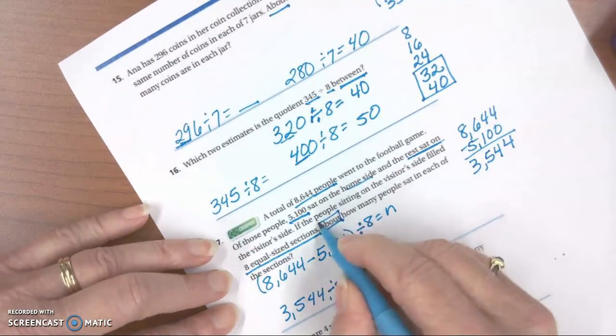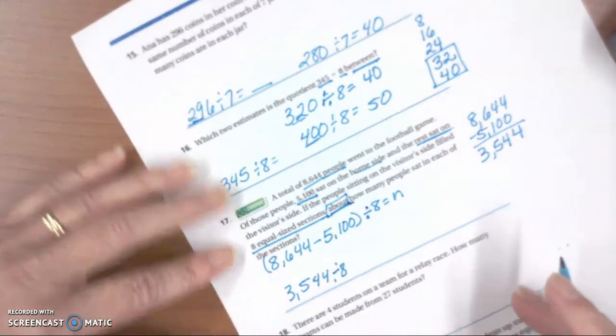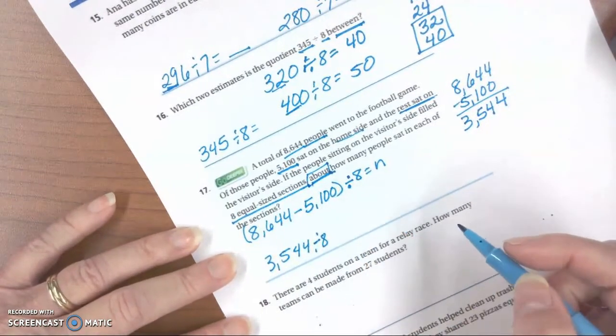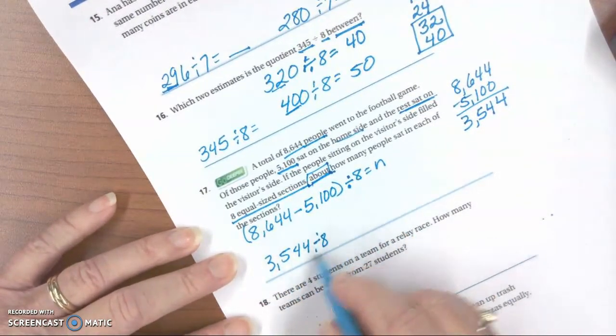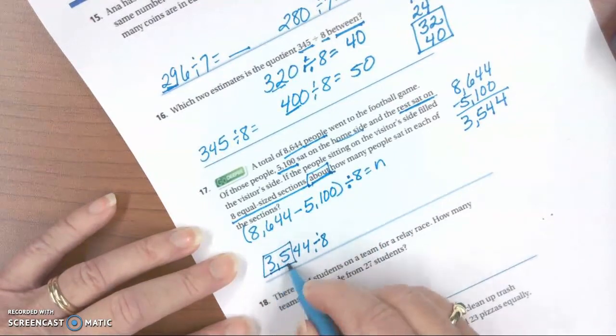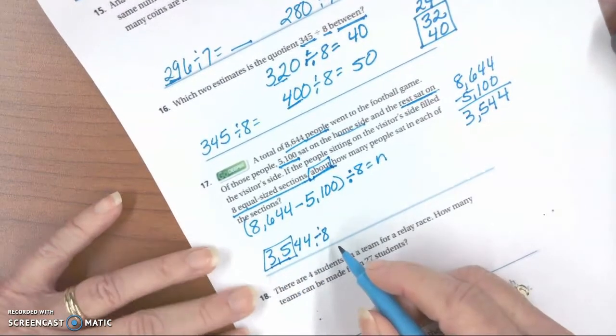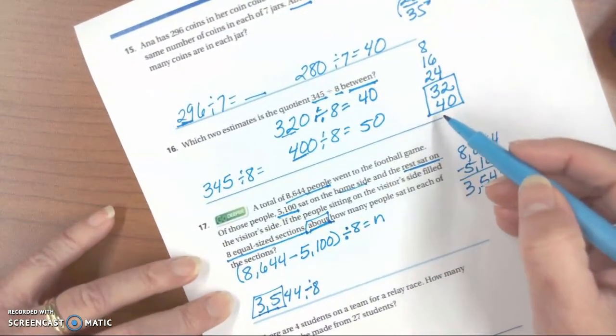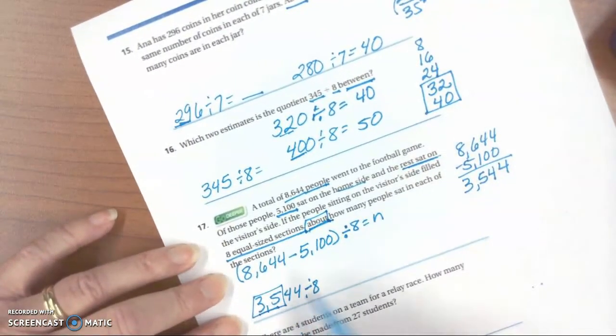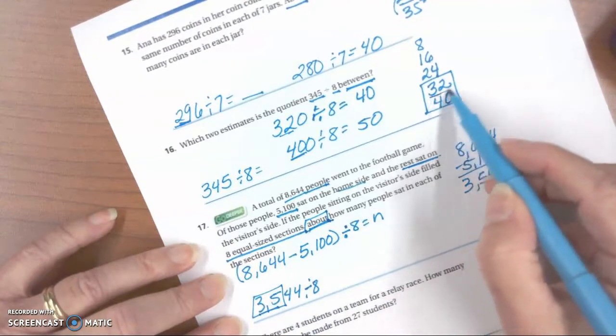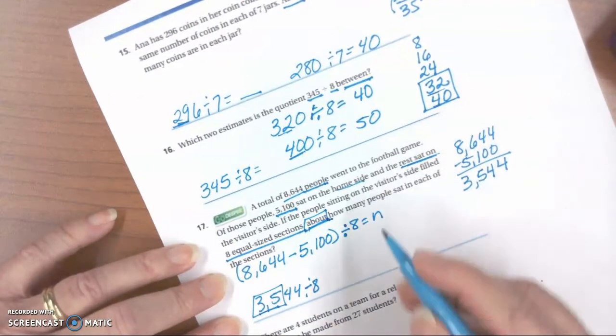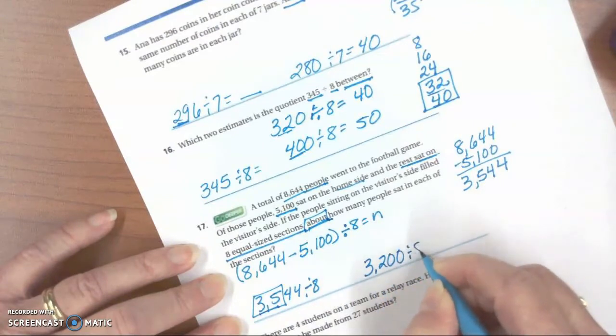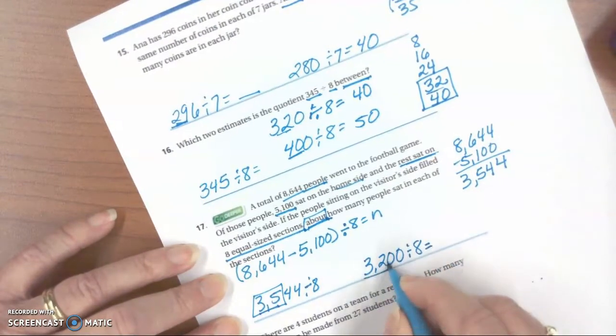Now we could solve that, but we have about, which tells us that we need to estimate. So when we're estimating, we're looking for our compatible numbers, or our multiples, and we have used the multiples of 8 up here. So when we look at 35,